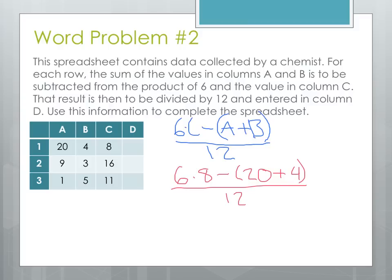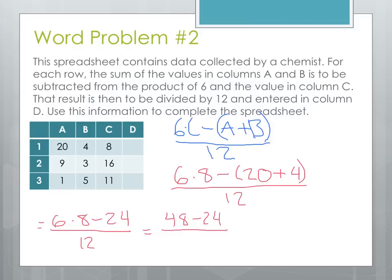We'll do the parentheses first. We'll get 6 times 8, minus — when we do that addition — 24. Still divided by 12. Now we'll do our multiplication: 8 times 6 is 48, minus 24, divided by 12. Time to subtract on top: 48 minus 24 is 24, still divided by 12. Now that we have a number on the top and a number on the bottom, we can divide. 24 divided by 12 is 2. So our number in column D for the first row will be 2.